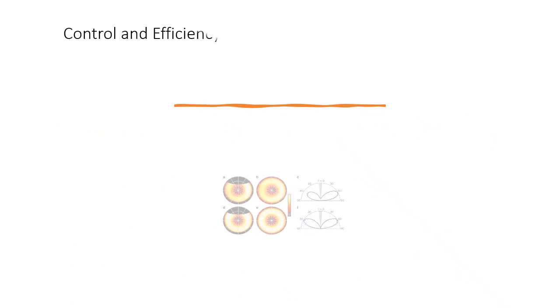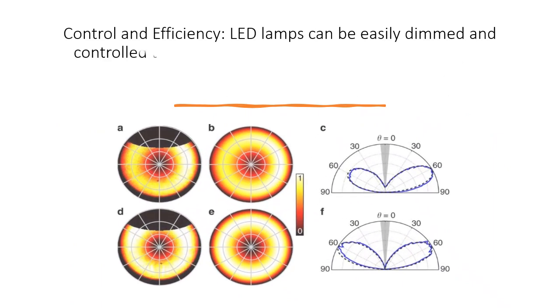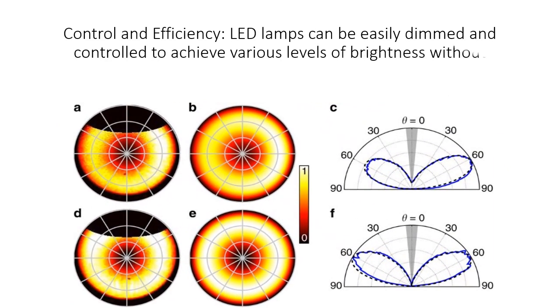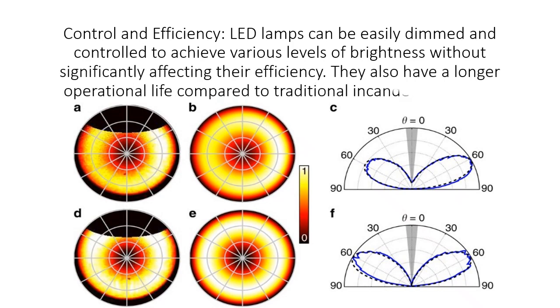Control and efficiency: LED lamps can be easily dimmed and controlled to achieve various levels of brightness without significantly affecting their efficiency. They also have a longer operational life compared to traditional incandescent bulbs.